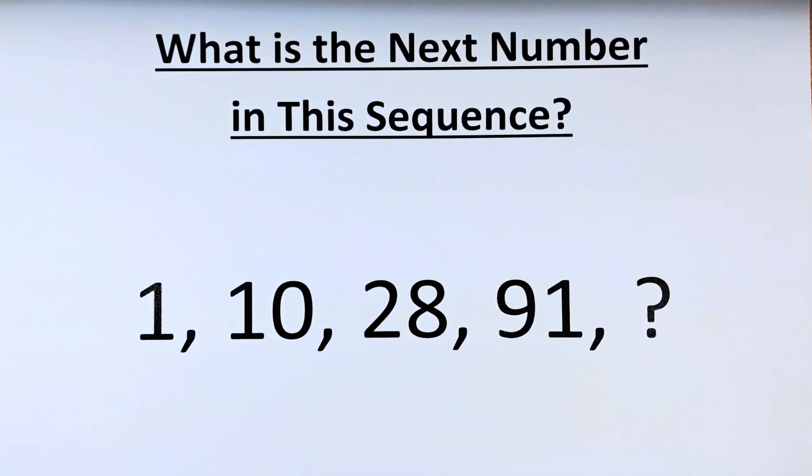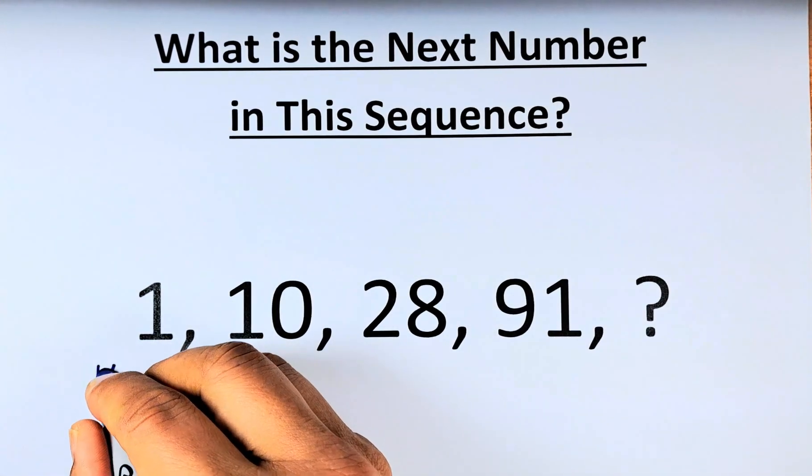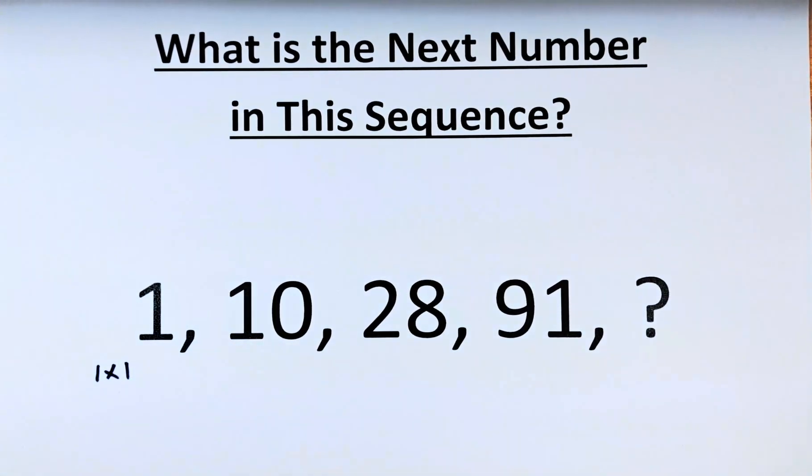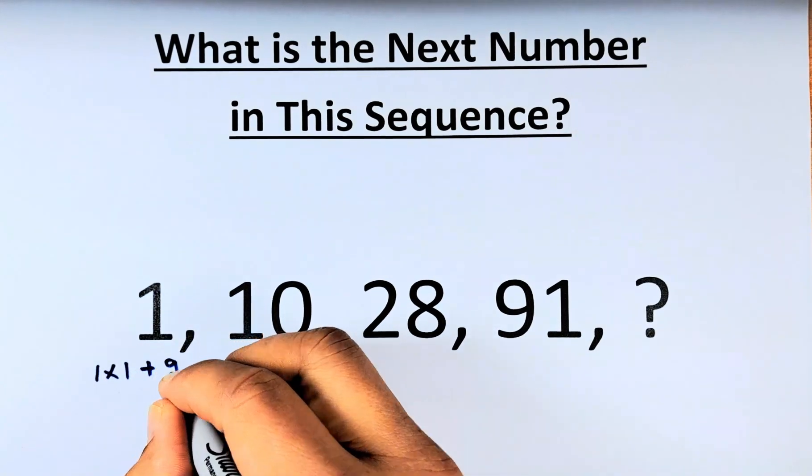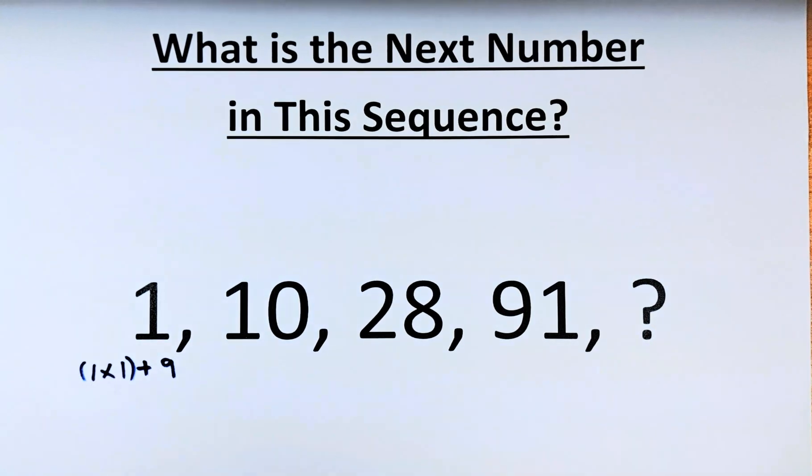So 1 is actually made up of 1 multiplied by 1, and then that is equal to 1. And to get 10, we plus 9, because 1 times 1 is going to be 1 plus 9, and we get the next number, which is 10.